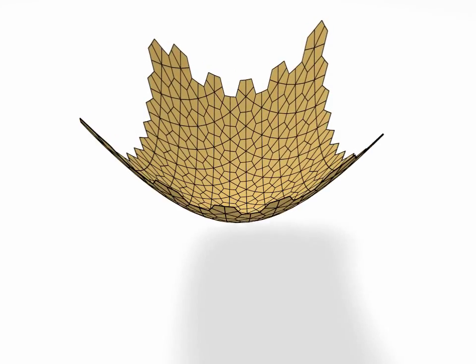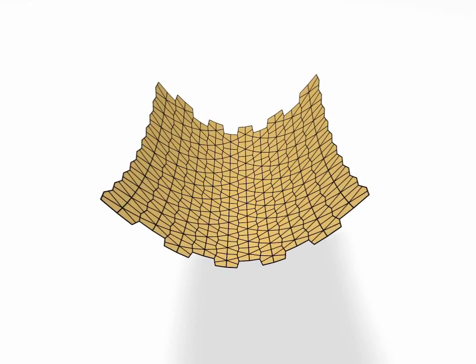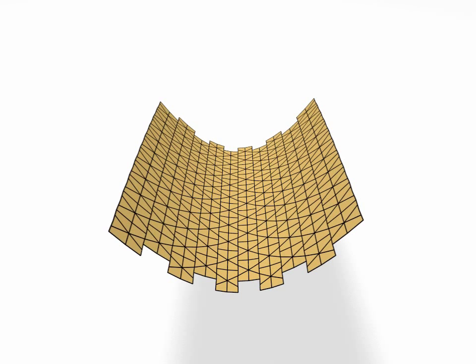This shows the deformation of another pattern used in our paper. Notice how the vertices are aligned with the rulings of the parabolic cylinder.